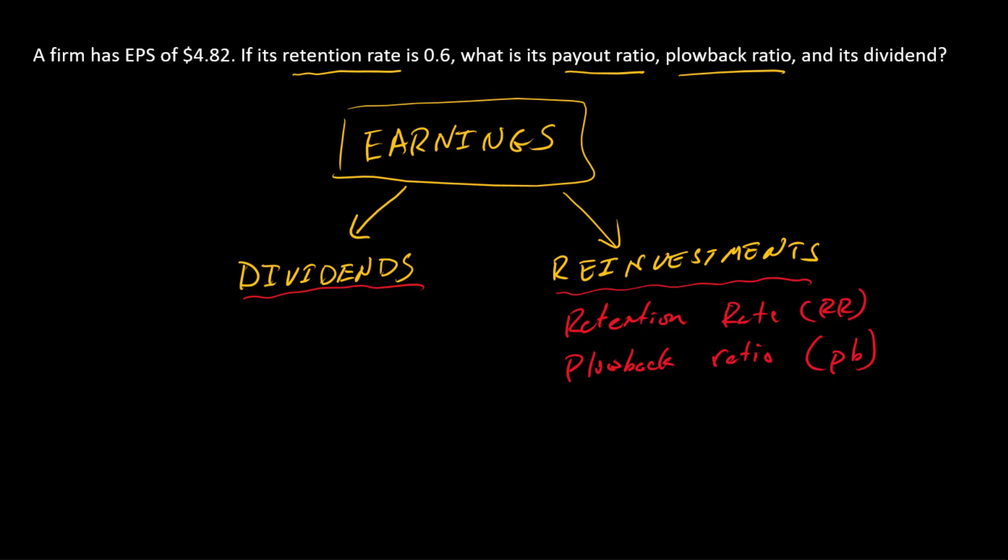And then on the dividend side, we'll call the fraction of earnings that are paid out as dividends the payout ratio. So going back to this problem, we've got the dividend stuff and the reinvestment stuff, and we know that in dollars those are going to sum to earnings.